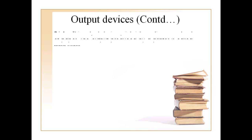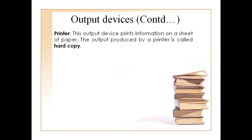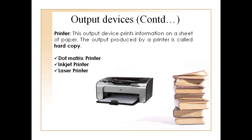The next output device is the printer. It gives output onto a sheet of paper. The printed output is called hard copy. The most commonly used printers are dot matrix printer, inkjet printer, and laser printer.